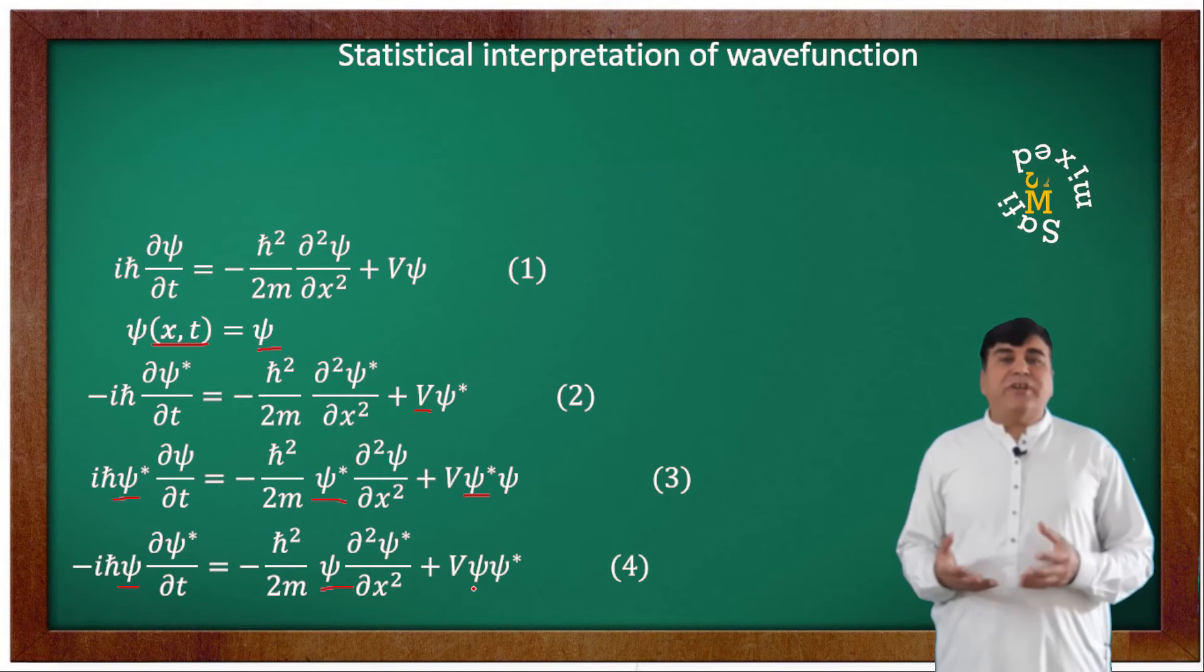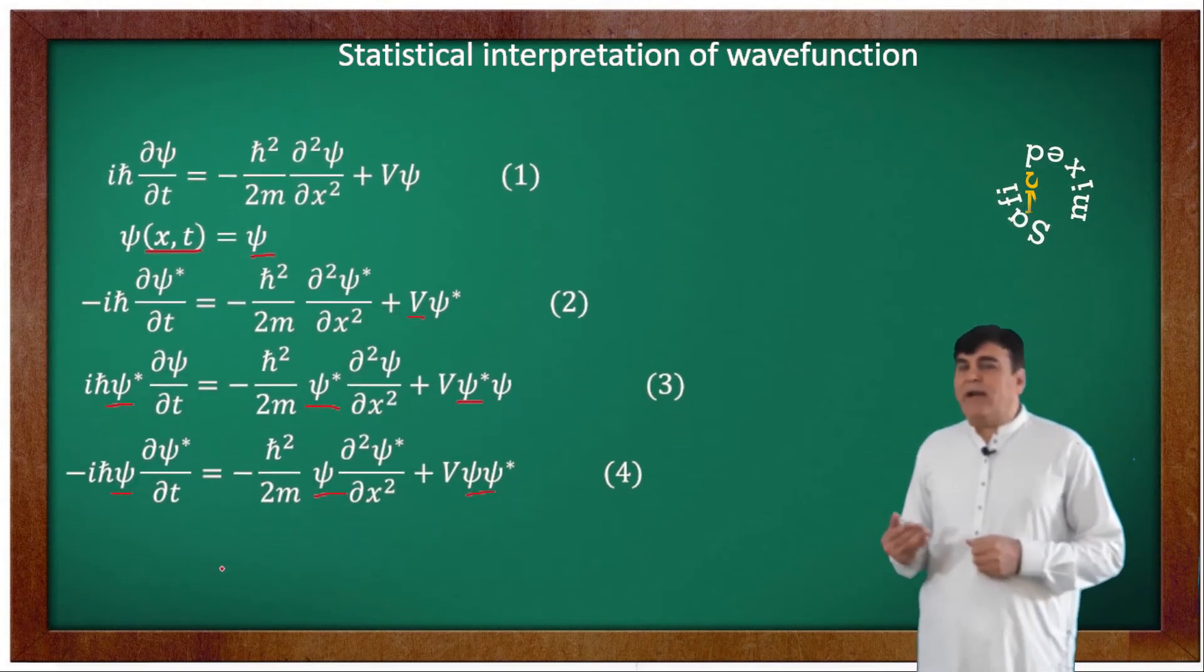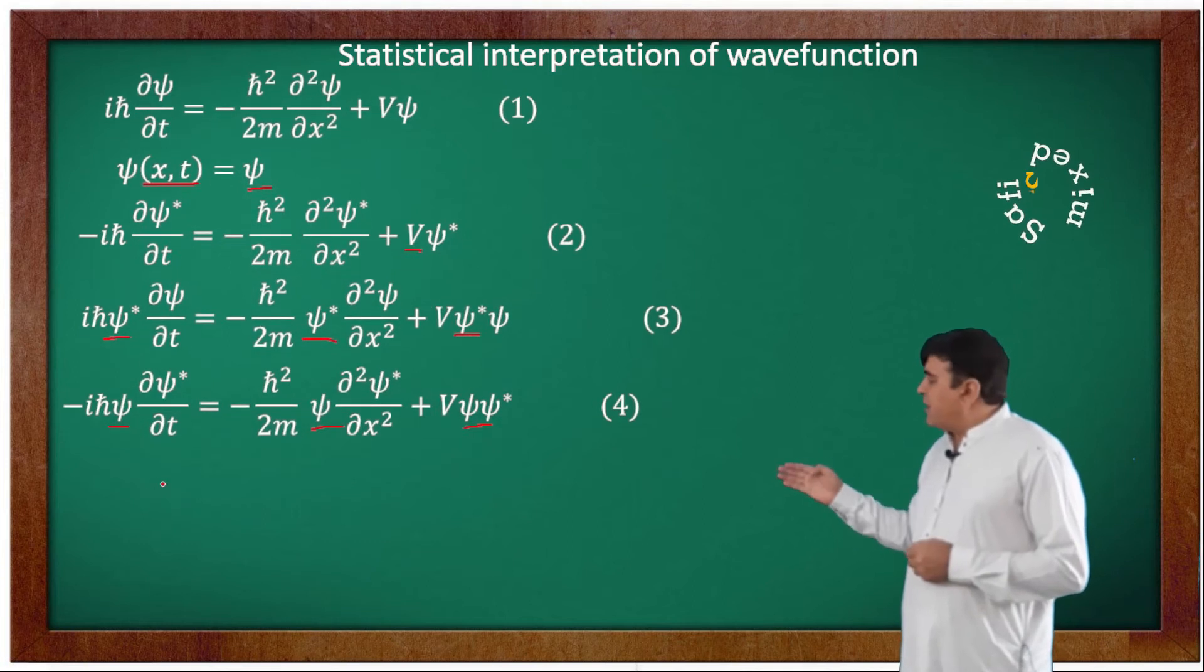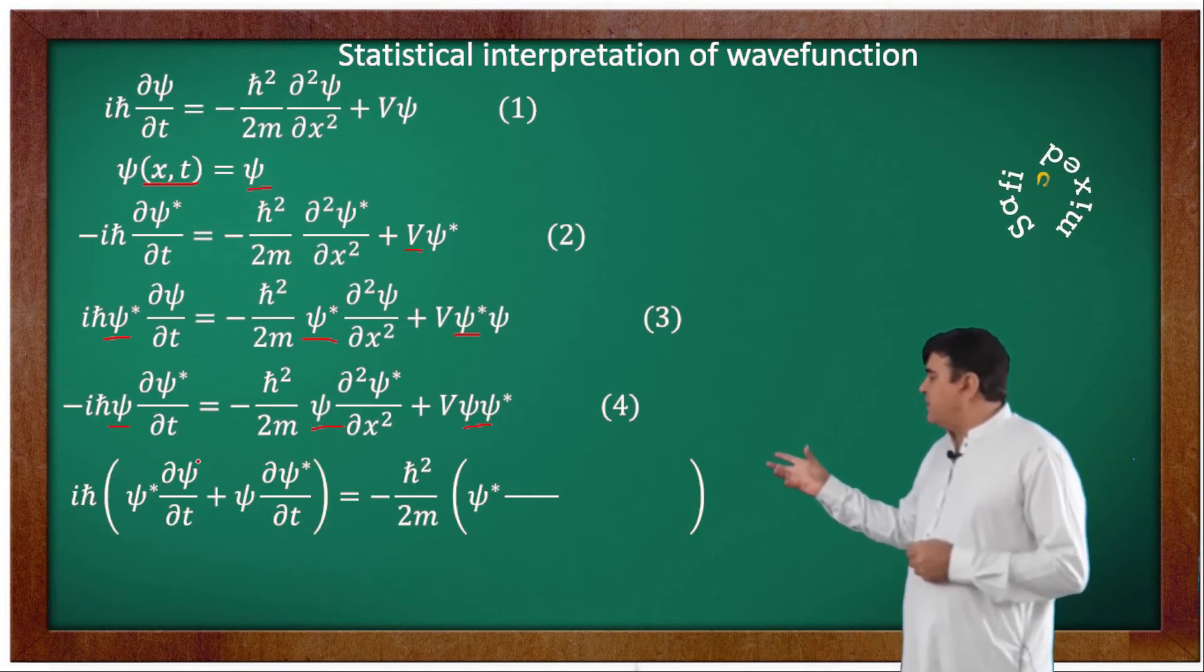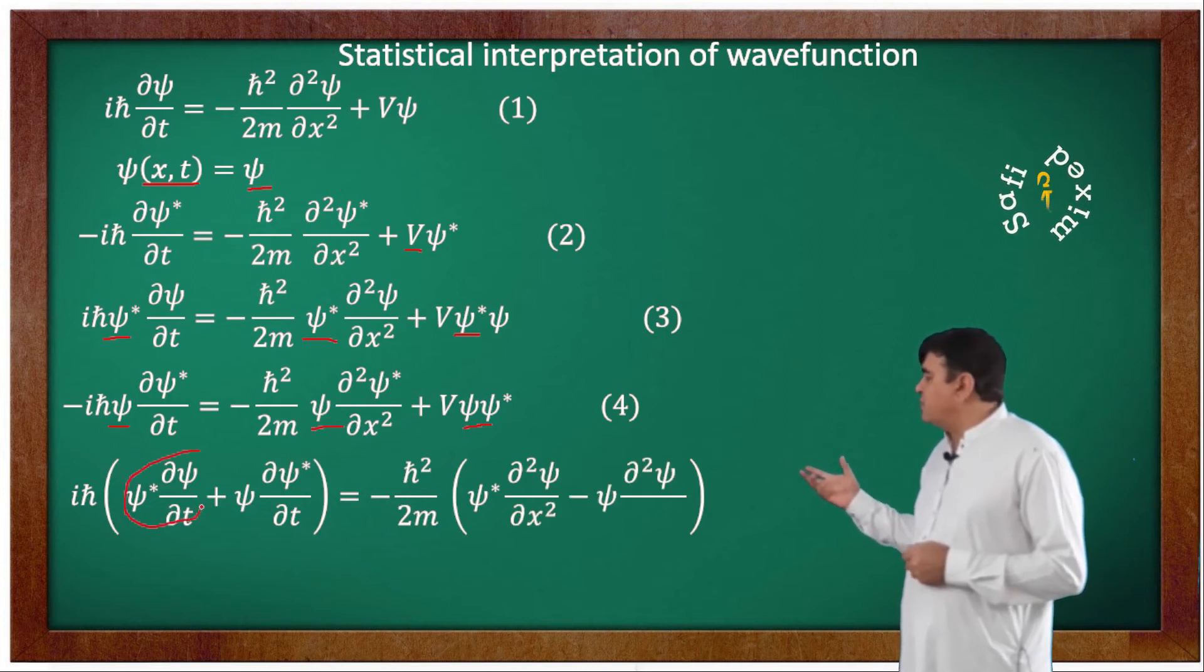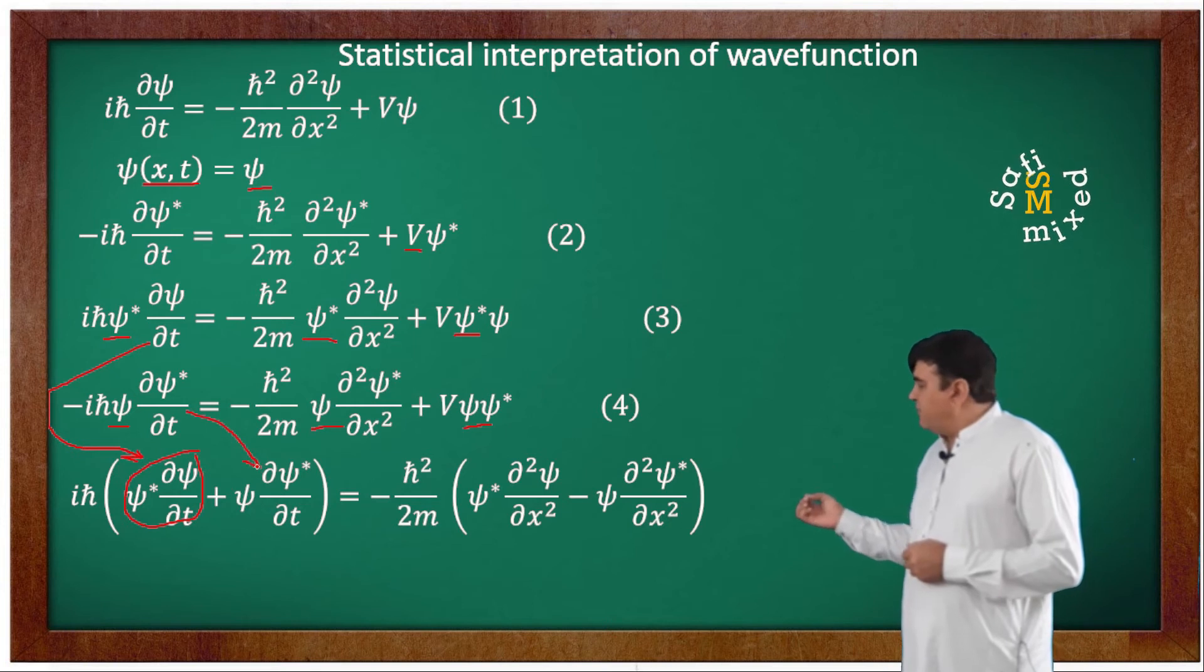Now if I subtract equation 4 from equation 3, I can write the equation like this where I have taken iota h-bar common in the first term inside the bracket on the left correspond to the first term of equation 3 and the second term inside the bracket correspond to the first term of equation 4.